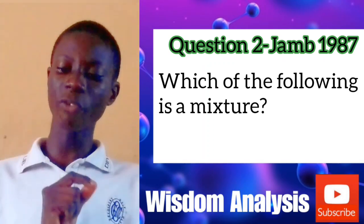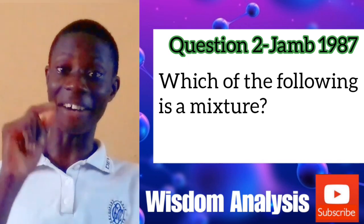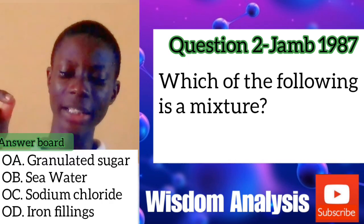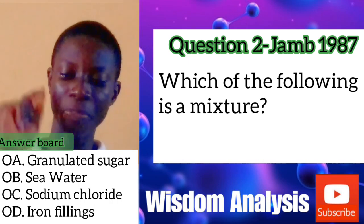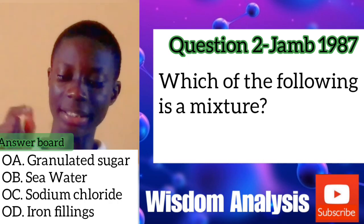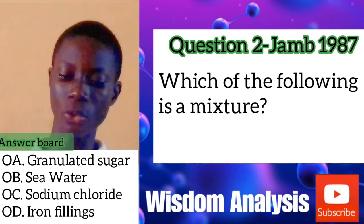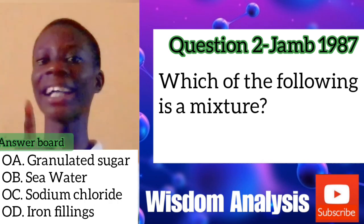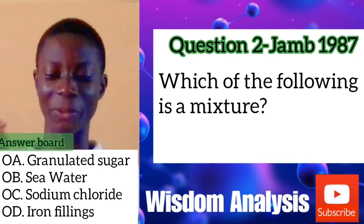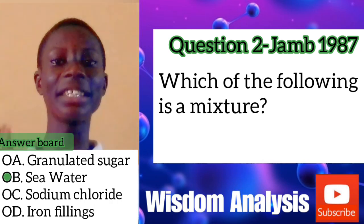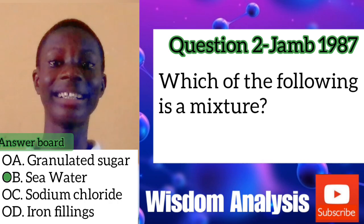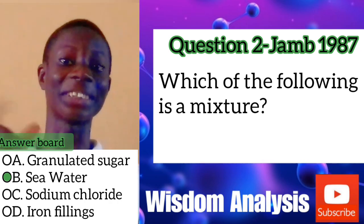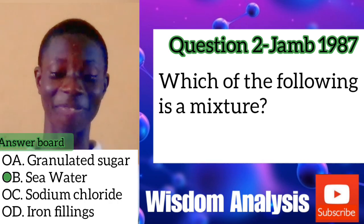The second question from element, mixture and compound is from JAM 1987: Which of the following is a mixture? A: granulated sugar; B: (option B); C: water; D: iron filings. The answer is C — sea water. It is just like the salt and water solution I gave as an example of a mixture.